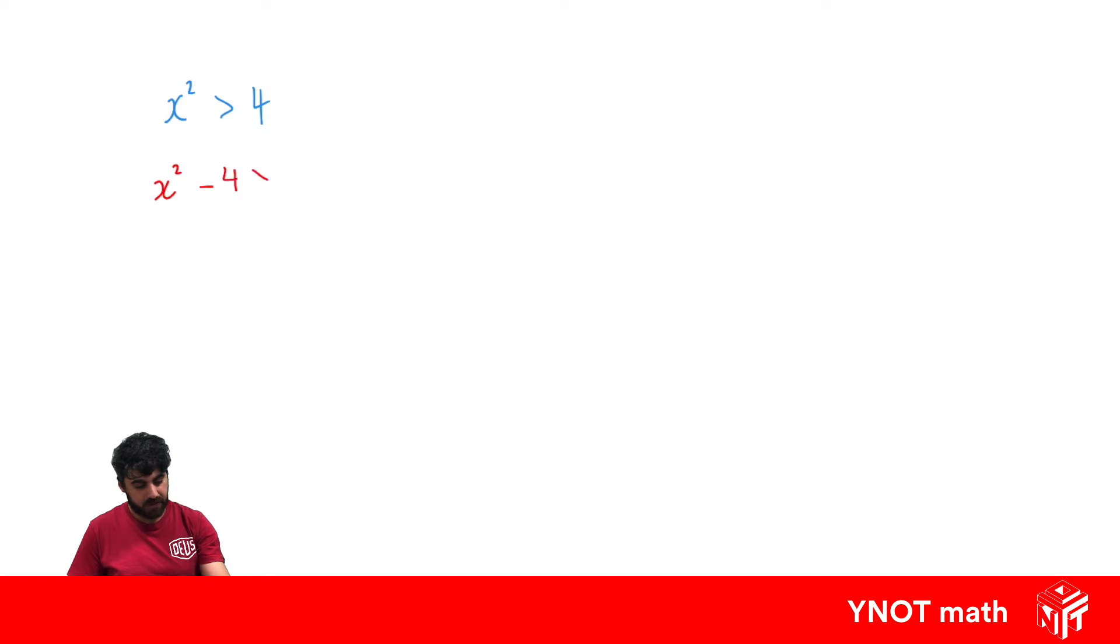We know this is the difference of two squares, so we can factorize this as x minus 2 and x plus 2 is greater than 0. That's going to let us go ahead and sketch it on our number plane.